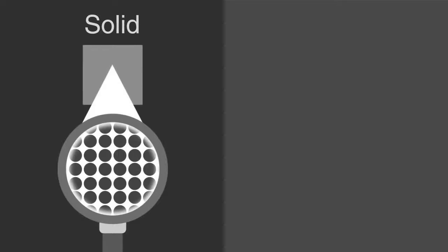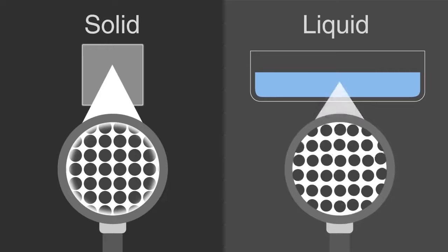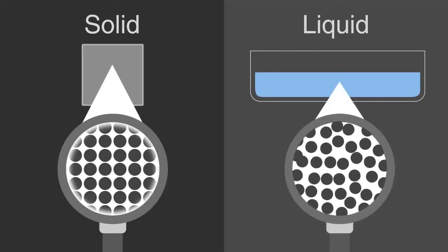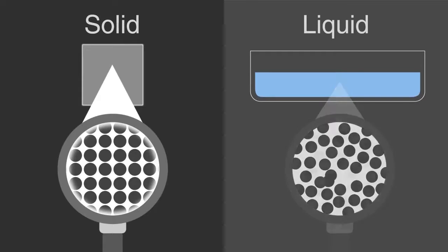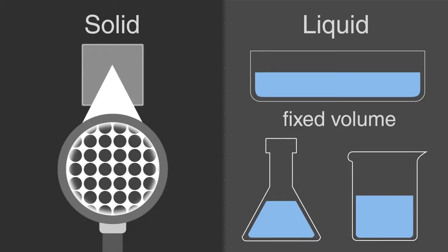Recall that in a solid, all of the particles are closely packed in a fixed position, and therefore has a fixed shape and volume. The particles in a liquid are still touching one another and are able to move around each other. Therefore, a liquid still has a fixed volume, but it takes the shape of their container.